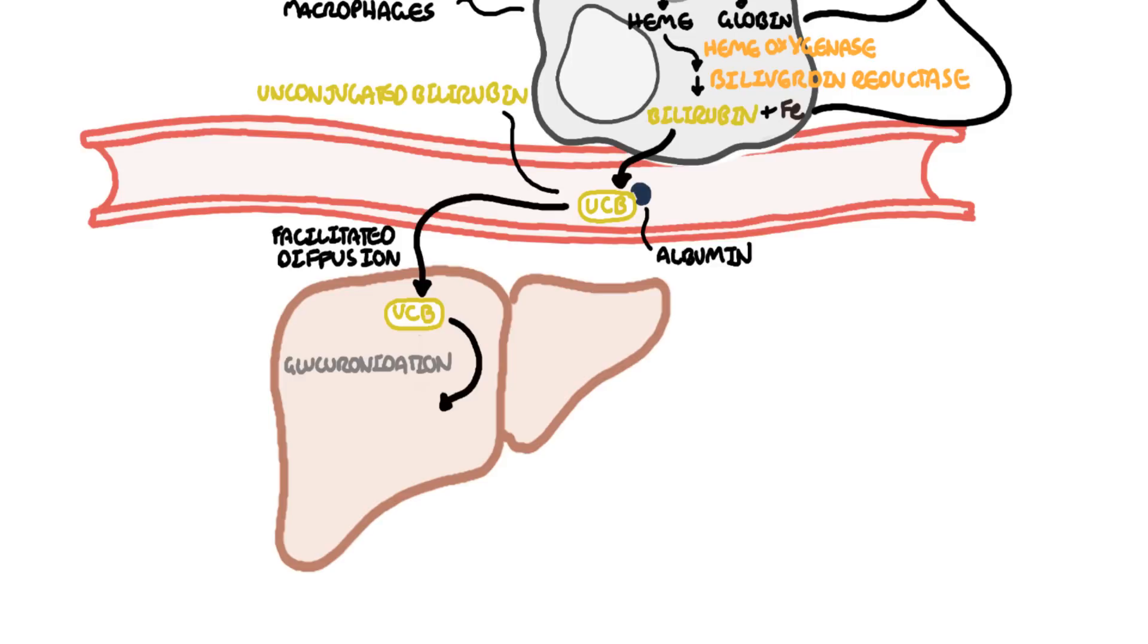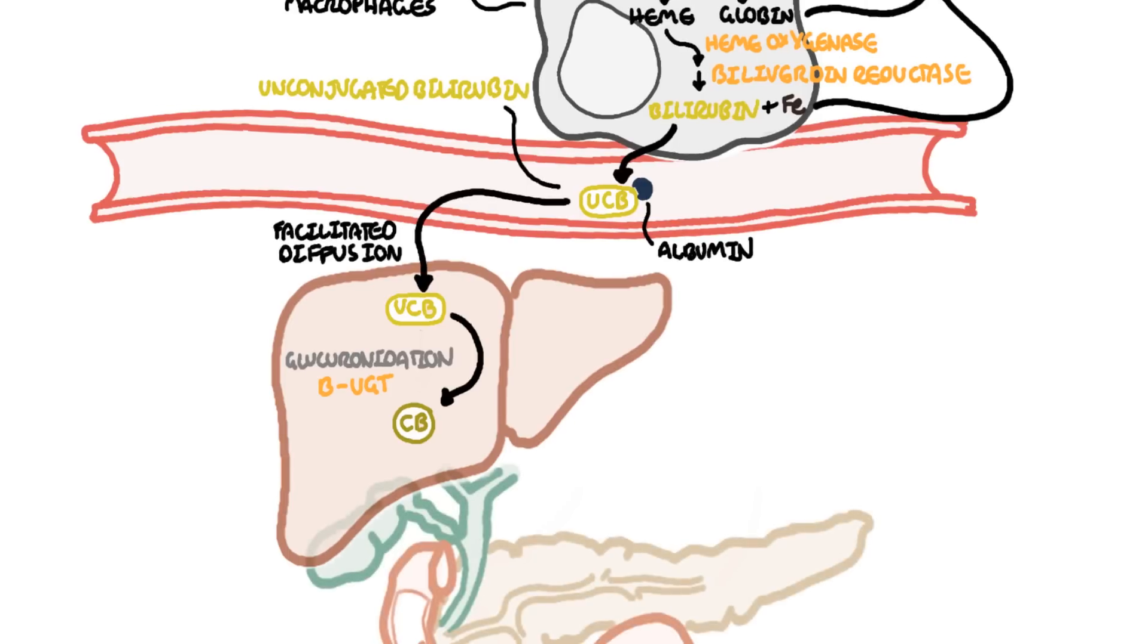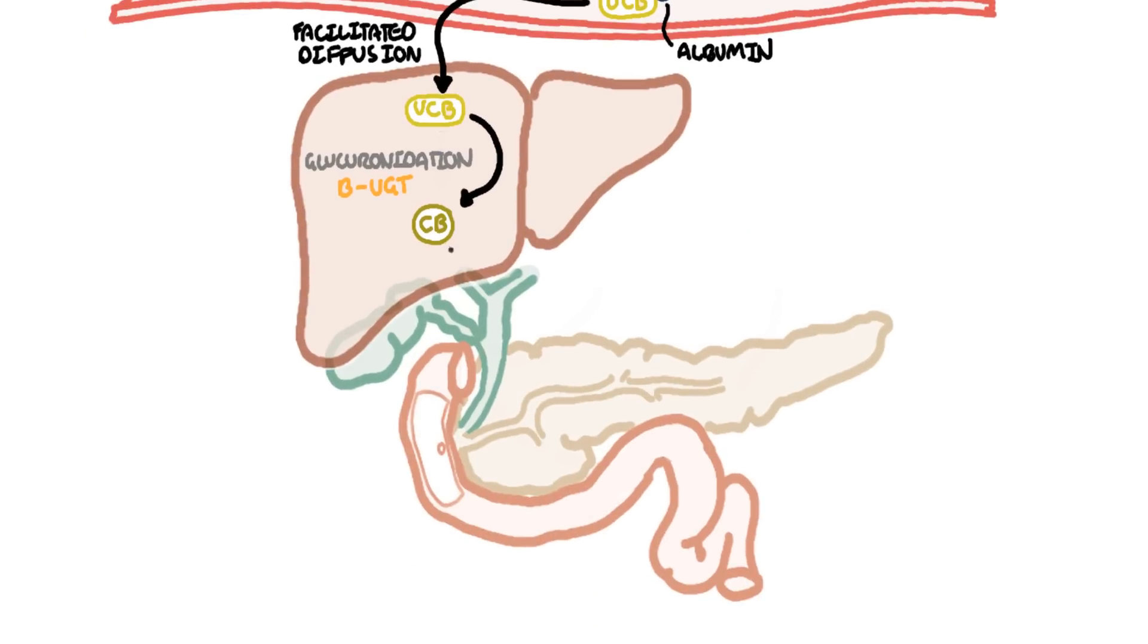Glucuronidation is carried out by a family of enzymes called uridine diphosphoglucuronate glucuronosyl transferase or UGT. In the case of bilirubin it is bilirubin UGT. The unconjugated bilirubin is now conjugated bilirubin and is water soluble. It is secreted into the biliary system and is a component of bile.